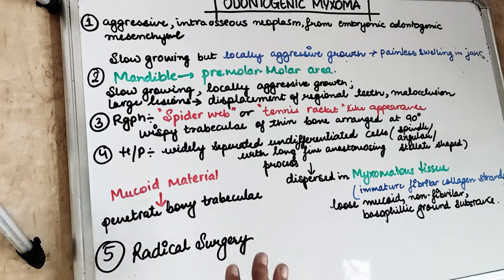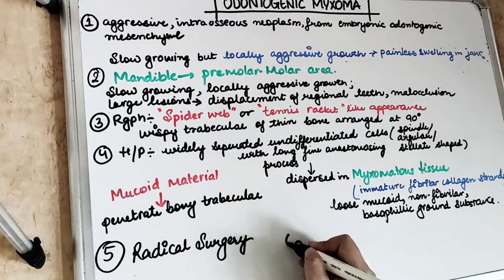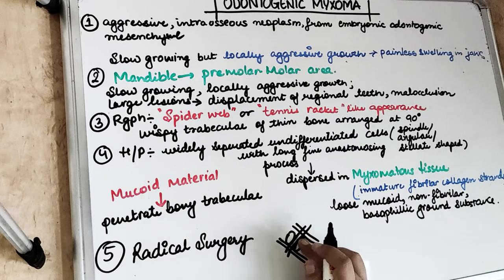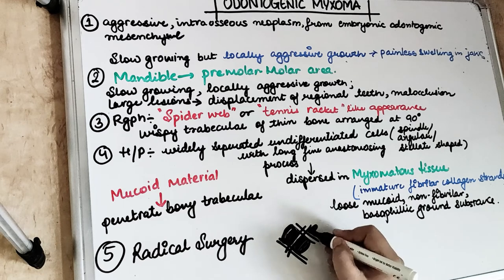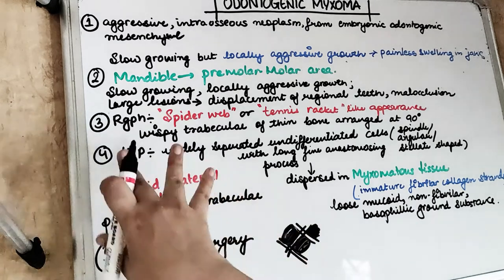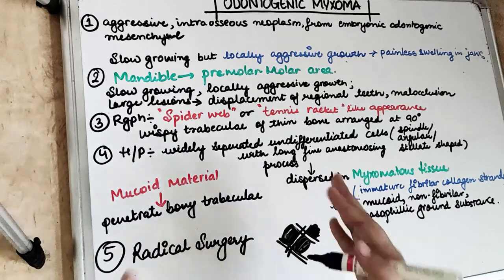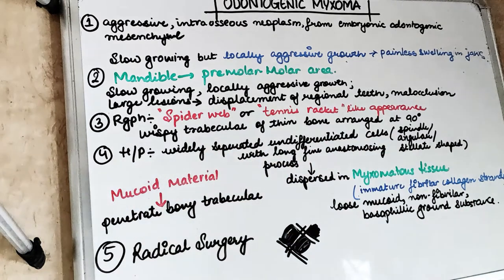Radiographically, we see multilocular radiolucencies with thin and delicate septa present between them. Because of these septa, we call it the spider web or tennis racket appearance. These trabeculate thin bones are placed perpendicular to each other — at 90 degrees — and they produce the spider web or tennis racket appearance.